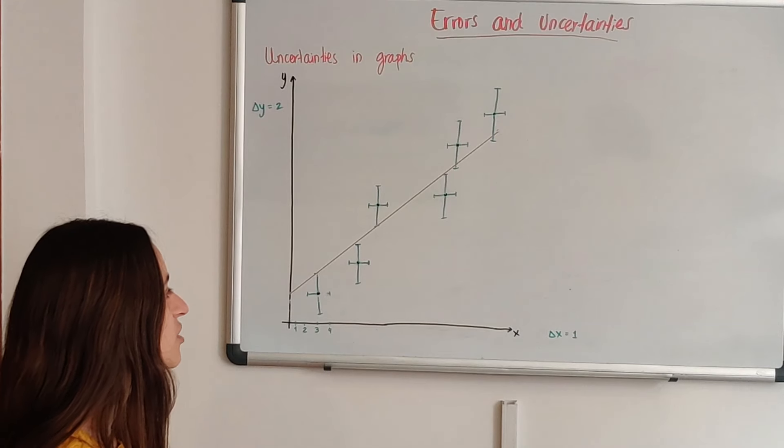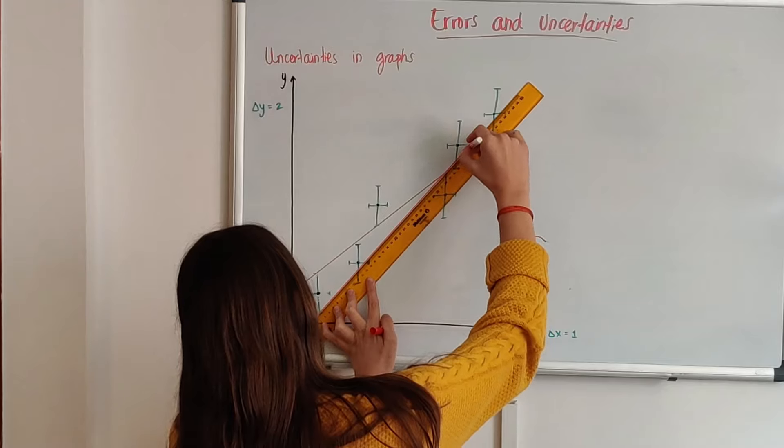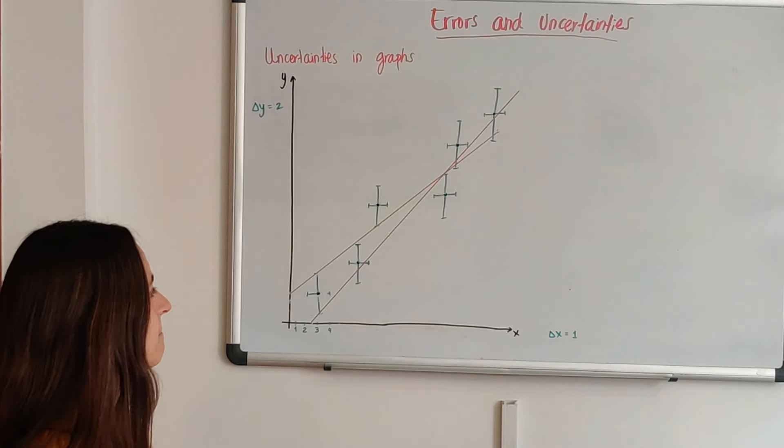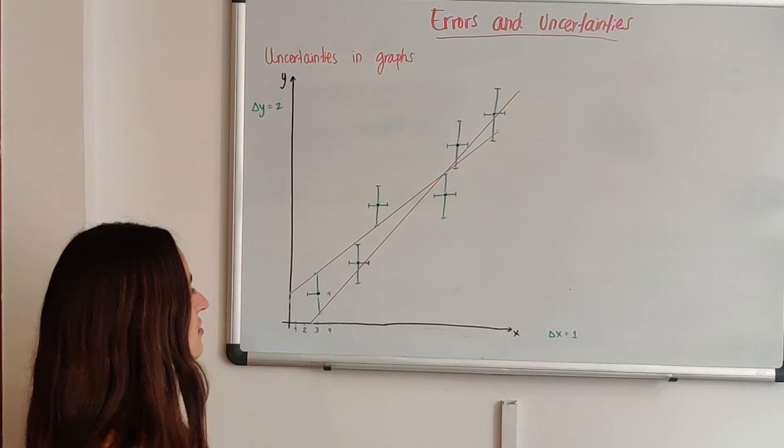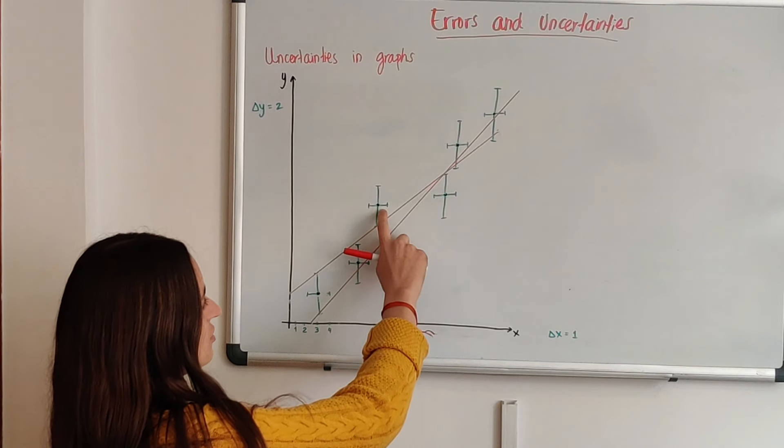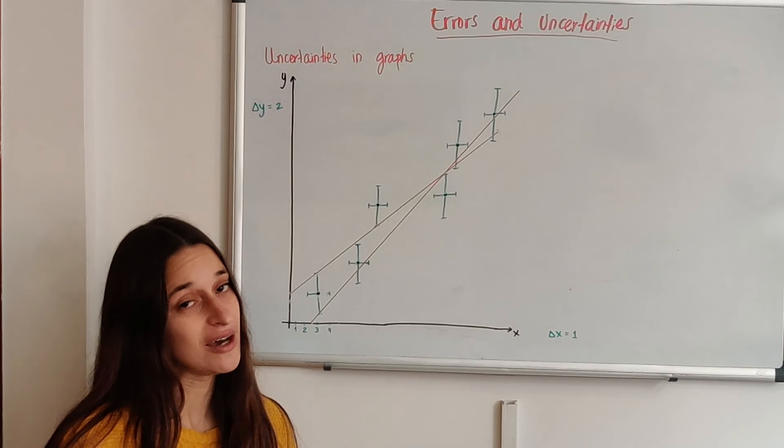Now I need to make a line that has a bigger slope. Let's see if we can do that. Okay, notice that I definitely failed because I decided to ignore this one that looks a little bit like it's an outlier, like it shouldn't be there.